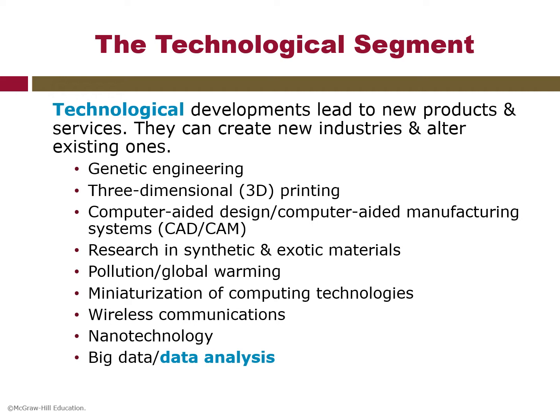When we discuss the technological segment — looking at improvements in products and services provided by science — relevant factors include changes in the rate of new product development, increases in automation, and advancement in service industry delivery. Technology can create new industries and alter existing ones, such as genetic engineering, 3D printing, computer-aided design or manufacturing, research in synthetic and exotic materials, pollution, global warming, miniaturization of computing technologies, wireless communication, nanotechnology, and big data analysis.